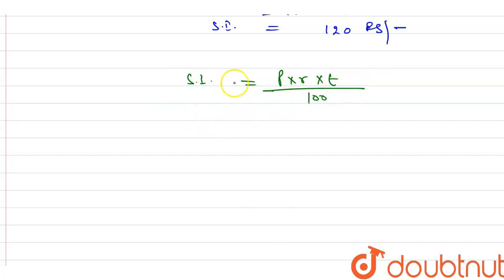Now what is the simple interest? As we have calculated, it is 120. Principal amount we know is 1200. Rate we have to find, we will write R, and time is 2 years upon 100. Now 20 will be cancelled by 20.